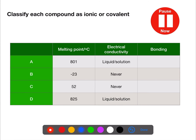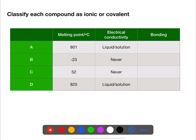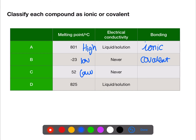Have a look at this table and classify each compound as ionic or covalent based on their properties. For the first compound we have a high melting point of 801 and it conducts as a liquid or in solution — this would indicate that the bonding is ionic. For B we have a very low melting point and it never conducts electricity — this would indicate the bonding to be covalent. A melting point of 52 is also low with no conduction, so this would be a covalent compound. A melting point of 825 with conduction as a liquid would indicate that this is an ionic compound.